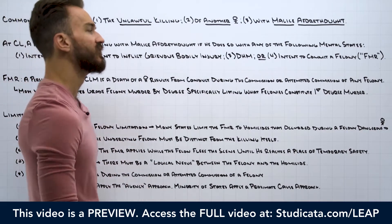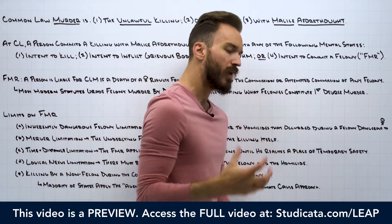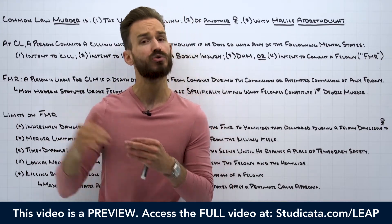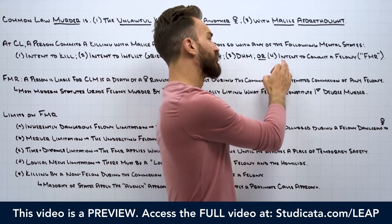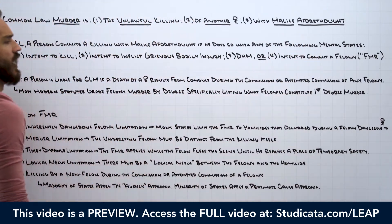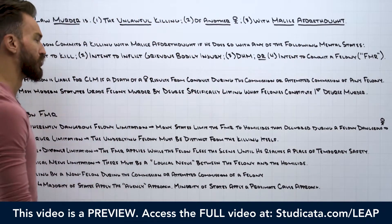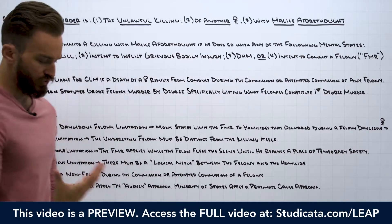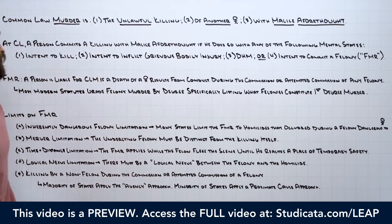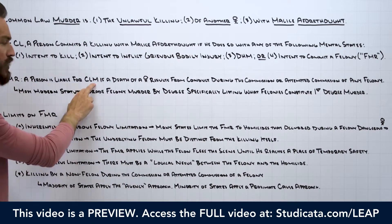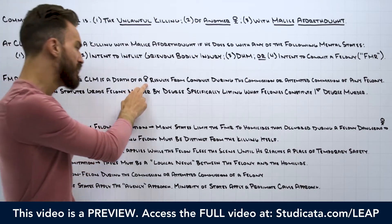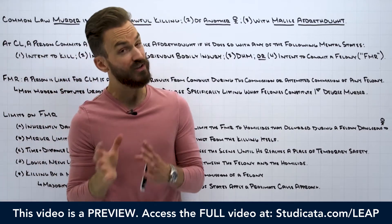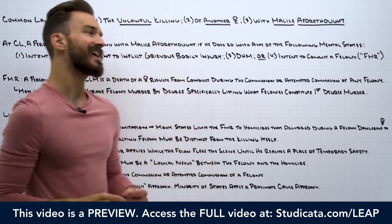The last mental state we need to talk about — another way we can imply malice aforethought on the defendant to get to common law murder — is going to be the intent to commit a felony under the felony murder rule. Our starting point rule is: a person is liable for murder if a death of a human being results from conduct during the commission or attempted commission of any felony.